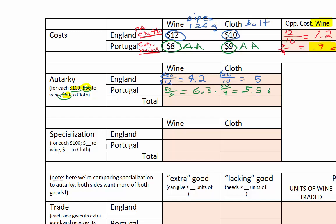Now let's total up what we have in autarky. For wine: 4.2 plus 6.3 equals 10.5 pipes of wine total between the two countries. For cloth: 5 plus 5.5 equals 10.5 bolts of cloth. So this is our baseline of 10.5 pipes of wine and 10.5 bolts of cloth that specialization needs to beat.